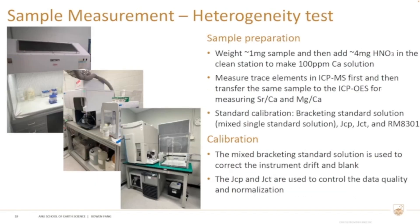For sample measurement we weigh one milligram of sample and add four milligrams of ultra-pure nitric acid in a clean station to make a 100 ppm calcium solution. We then measure trace elements by ICP-MS and transfer the same sample to ICP-OES for measuring strontium, calcium, and magnesium-calcium ratios. We do standard calibration by the bracketing standard solution method, using JCP, JCT, and RMA-301 as three certified standards for calibration.